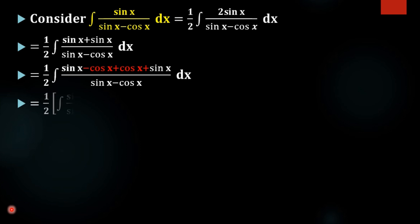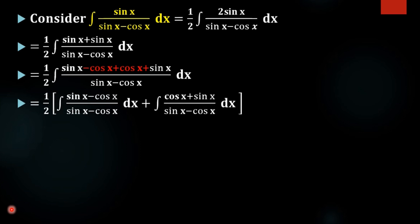We have sin x minus cos x divided by sin x minus cos x, plus integral of cos x plus sin x divided by sin x minus cos x. We are splitting the numerator or the function into two terms.